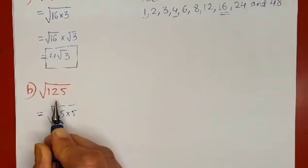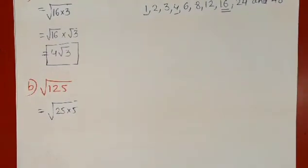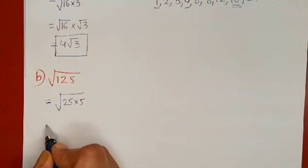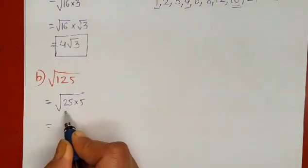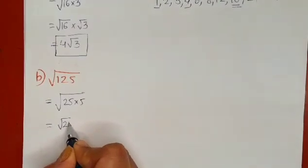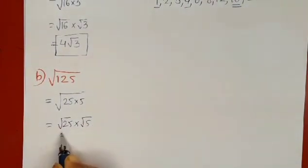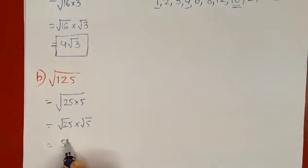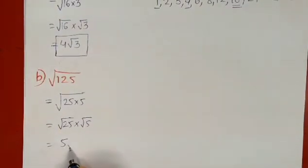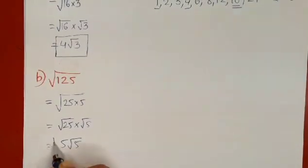So now this will be further split as root 25 times root 5. Now 25 is a perfect square number, so 5 root 5 is the solution.